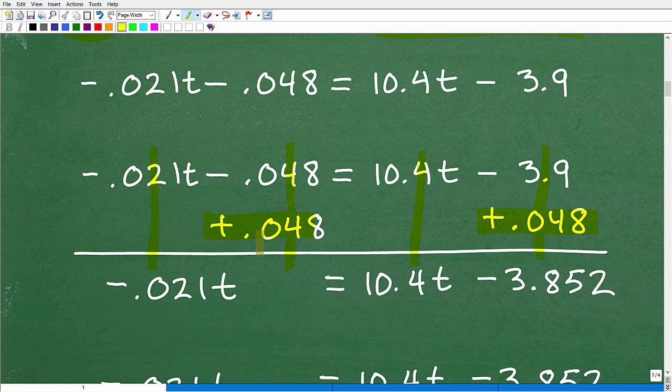Okay, so negative 0.021t plus nothing, negative 0.021t. And then these guys cancel each other out. Negative 0.048 plus 0.048, that's 0. That's what we hope for. And then 10.4t plus 0 is just 10.4t. And then we have this negative 3.9 plus 0.048. Use your calculator, okay, to do this stuff. And you're going to get negative 3.852.